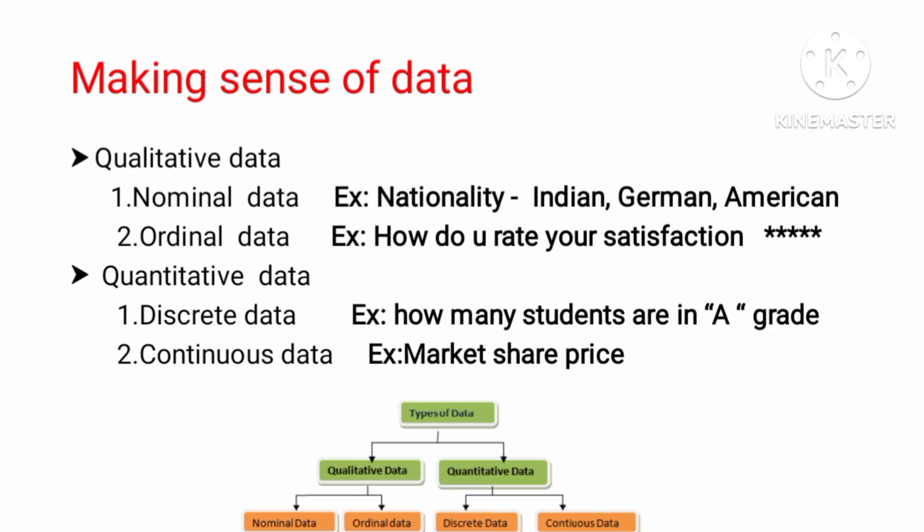Making sense of data: there are two kinds of data — qualitative data and quantitative data. Qualitative data is again divided into nominal data and ordinal data. Nominal data refers to categories with no inherent order, for example nationality: Indian, German.